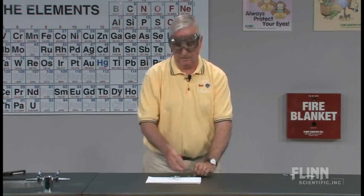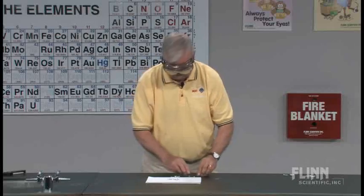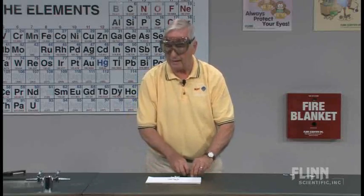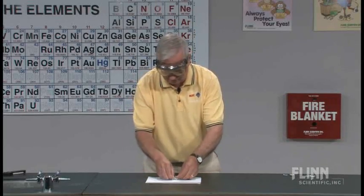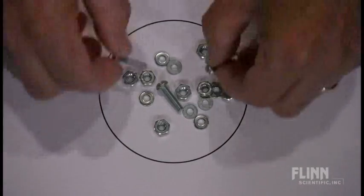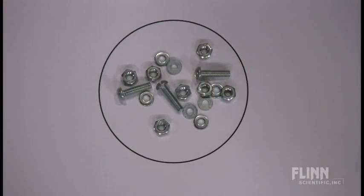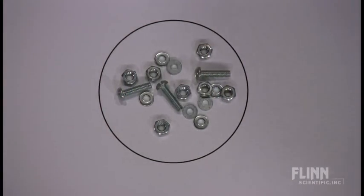For the term mixture, we say different amounts of different elements or compounds put together. So what we have is a random number — we don't necessarily have any set ratio. Here we have a mixture of bolts, nuts, and washers. Concrete example — we're able to look at them.